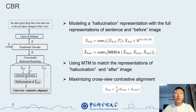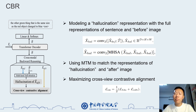To improve captioning quality, we further design a CBR module, which first models the hallucination representation with the full representations of the sentence and before-image. Then, CBR utilizes its MTM to match the representation of the hallucination and after-image. Finally, CBR maximizes cross-modal contrastive alignment to push both representations closer.